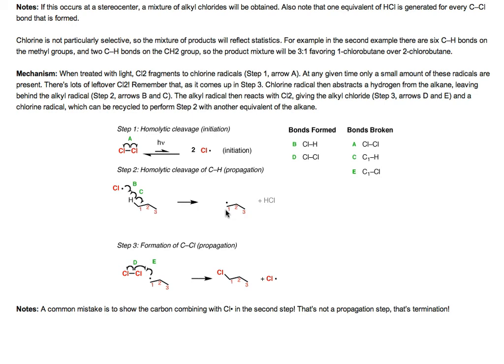What a lot of people are tempted to do is show this free radical on carbon one reacting with a second equivalent of chlorine radical formed in the initiation step, forming 1-chloropropane in the process. Although it's very tempting to do that, that's not technically a propagation step. We'd be starting with two free radicals on the left and ending with zero — that's actually a termination reaction. Watch out for that; don't make this mistake.